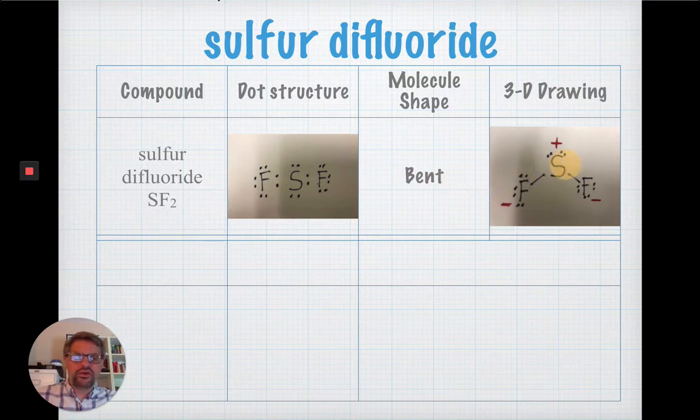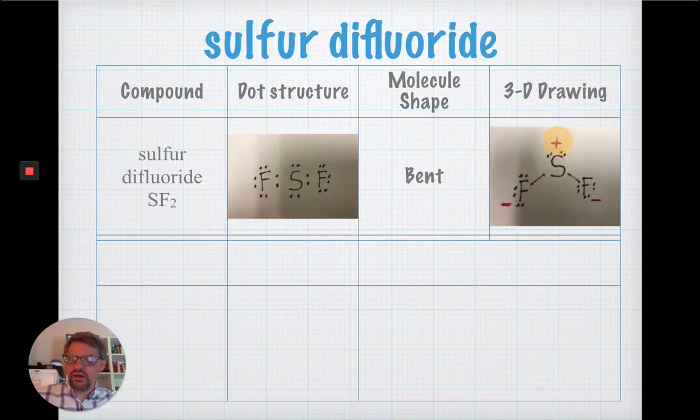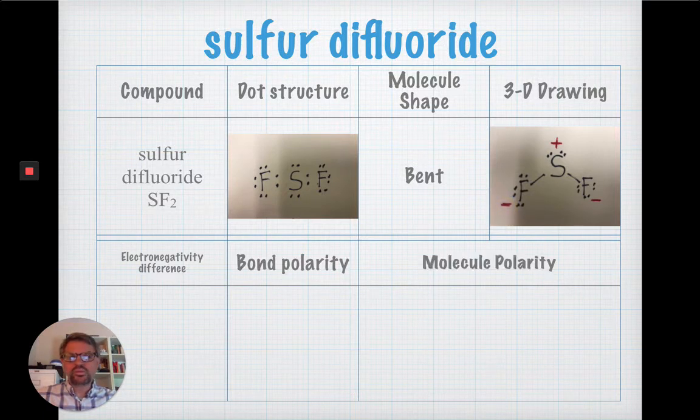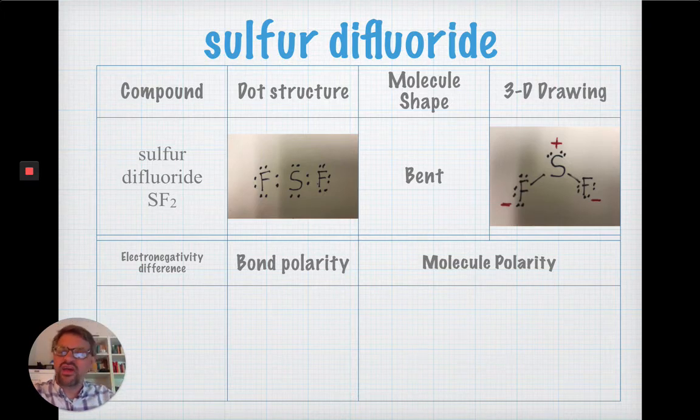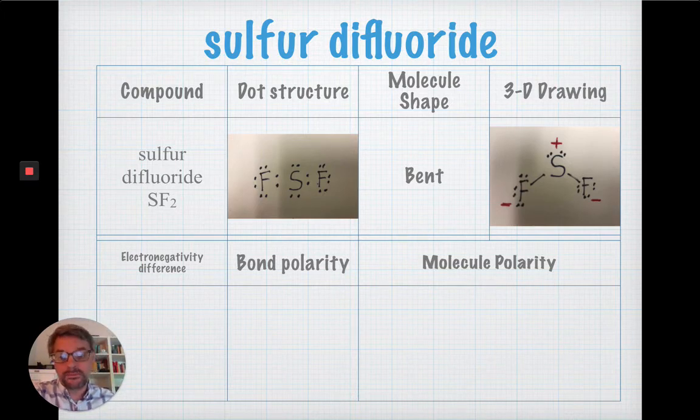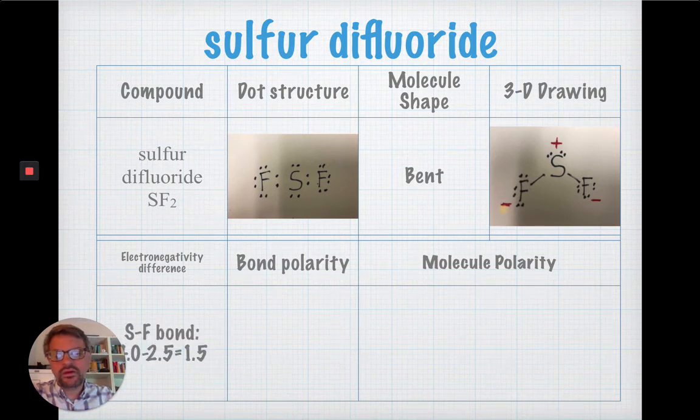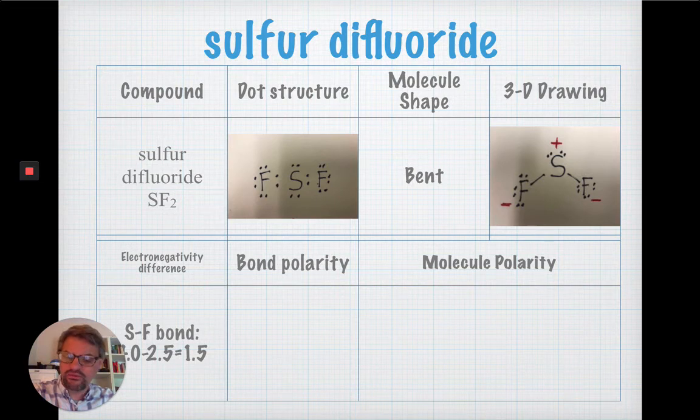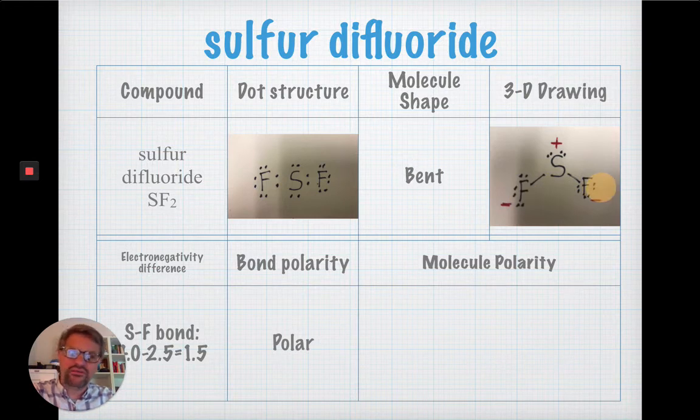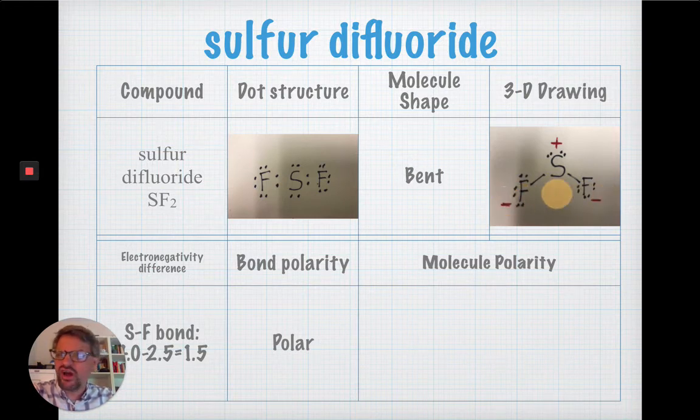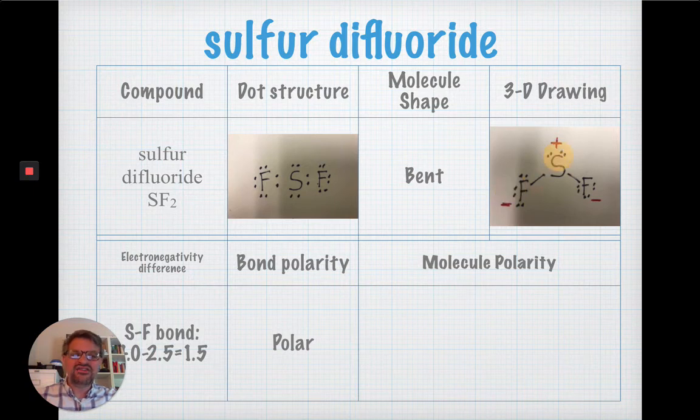Now, if you notice there, I've added a positive charge and two negative charges. Take a moment and determine is the sulfur fluorine bond, S to F, polar or non-polar? So, the electronegativity difference is 1.5. The bond is polar. Because fluorine has a higher electronegativity, it ends up being negative most of the time. Both fluorines and the sulfur is left with a positive charge most of the time.